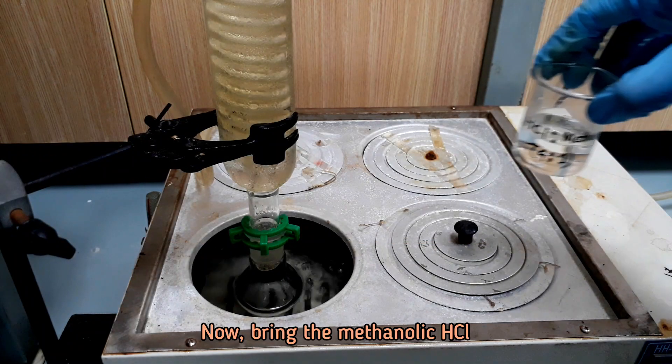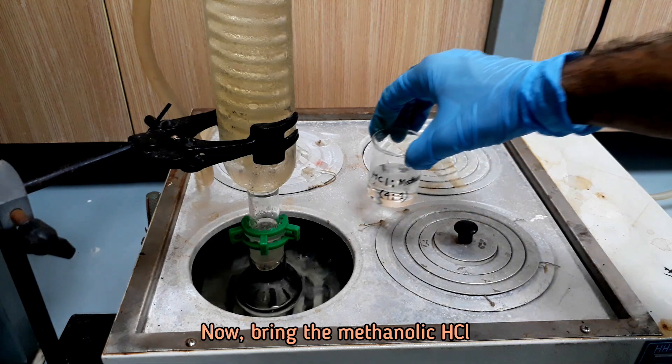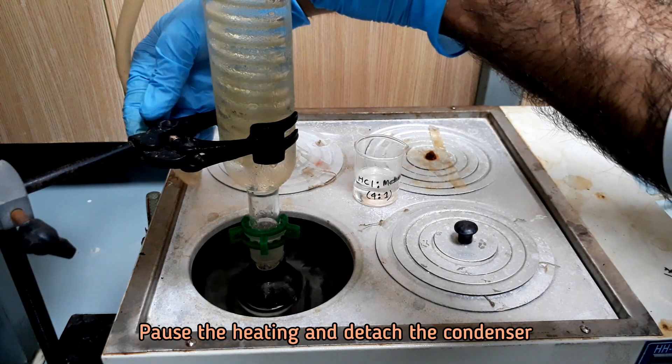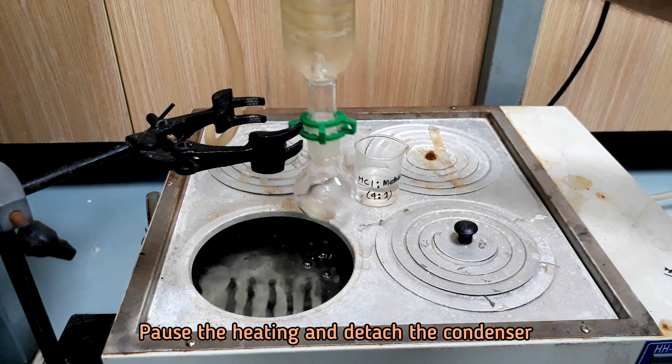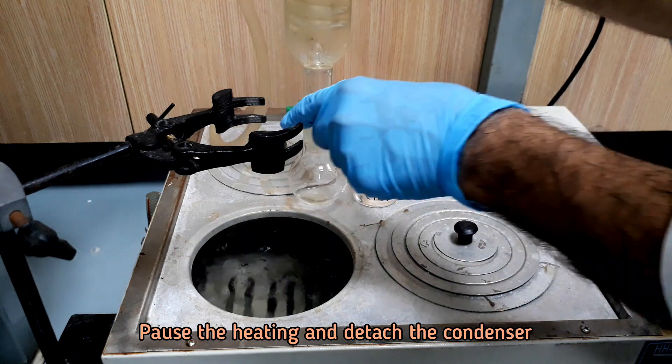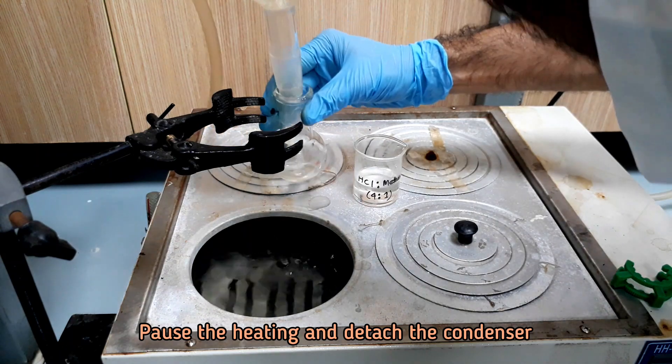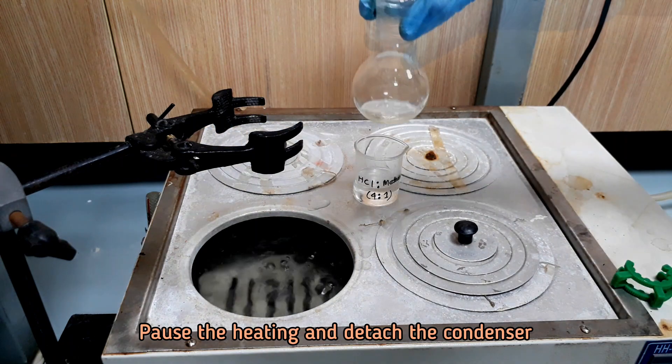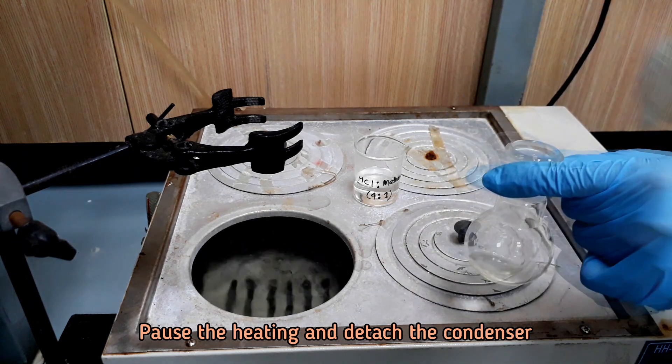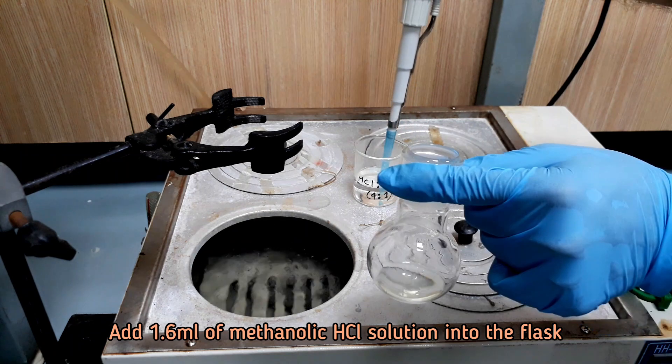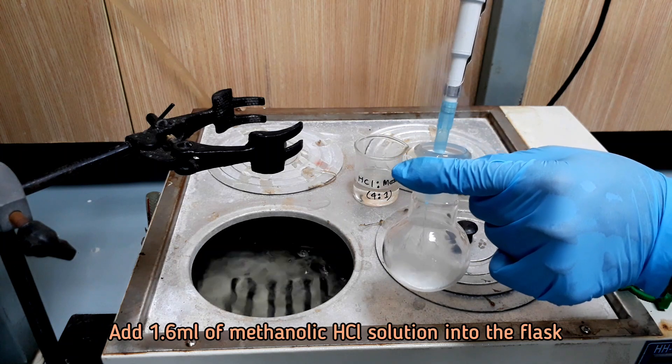After 15 minutes of boiling, bring the methanolic hydrochloric acid solution. Add 1.6 ml methanolic hydrochloric acid solution into the flask and continue boiling for another 25 minutes.